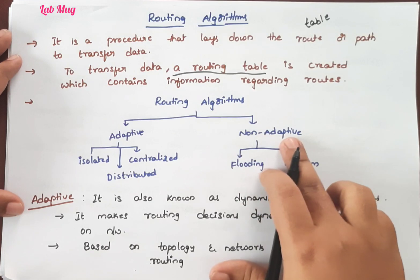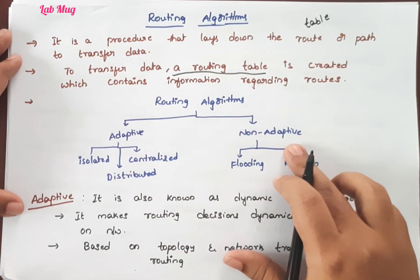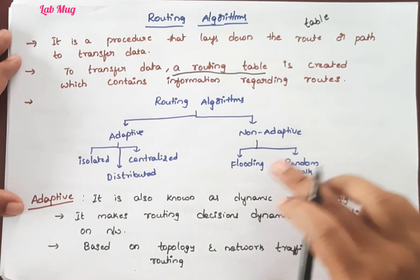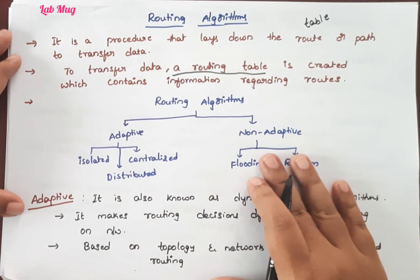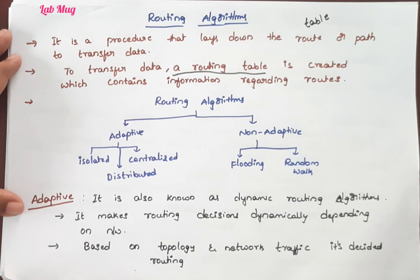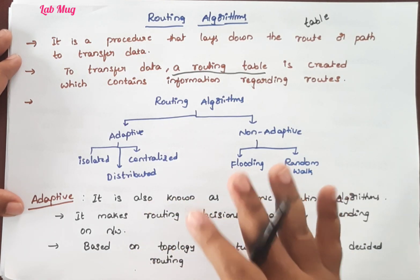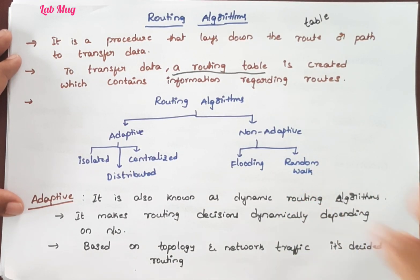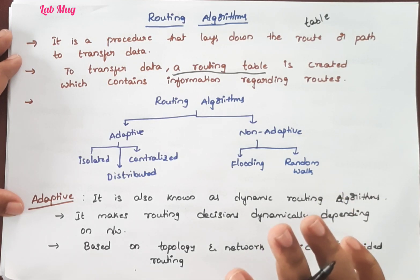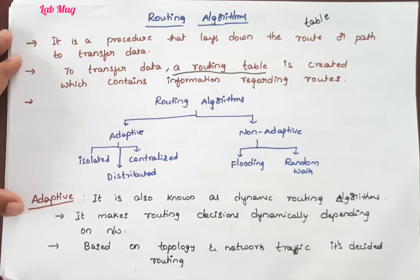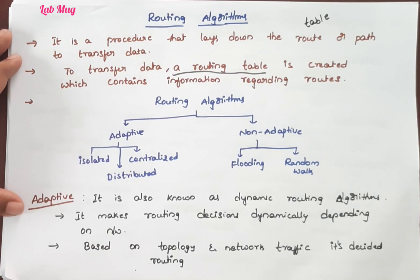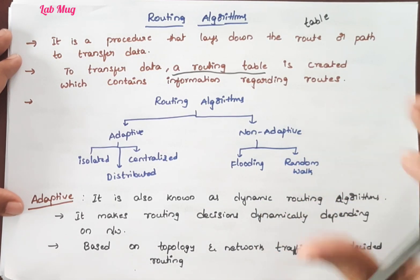Routing algorithms are of two types: adaptive routing algorithms and non-adaptive routing algorithms. Under adaptive, we have isolated, distributed, and centralized. Under non-adaptive, we have flooding and random walk. Using both combinations, we further use two algorithms — one distance-based and one link-based. These algorithms are important from an exam perspective, as two questions on algorithms are likely compulsory in competitive exams.